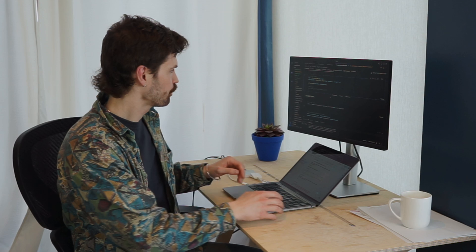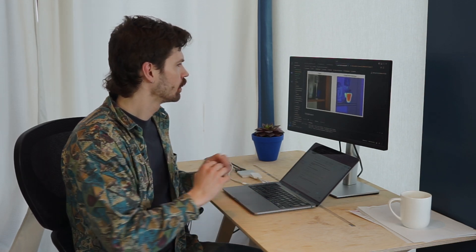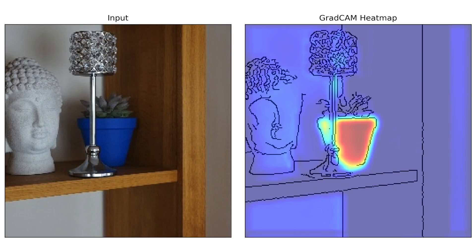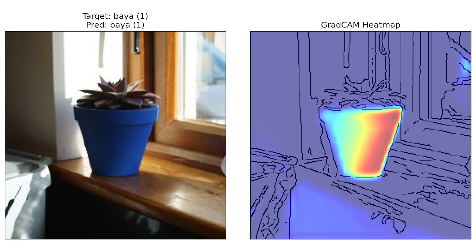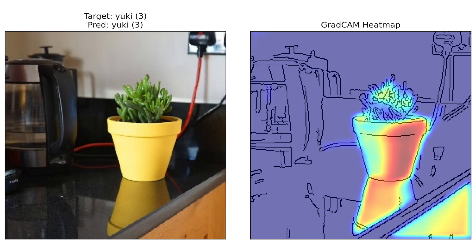Let's use an explainable AI method to understand if this is actually what's happening. We're going to use a method called GradCAM. Just know that it highlights which pixels in an image are being used to make a prediction. We can see that for this image of Rudo, the model has used the pixels from the pot to make a prediction — in this case leading to an incorrect prediction. We can see similar behavior for the other classes: the model is making correct predictions, but it is still relying on the pixels from the pot to make those predictions.